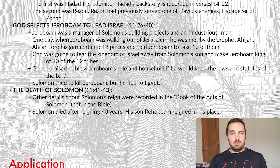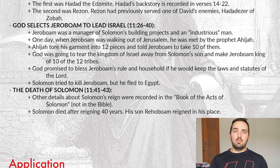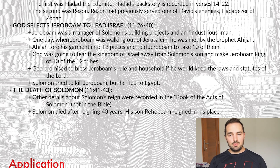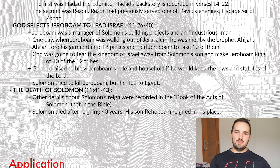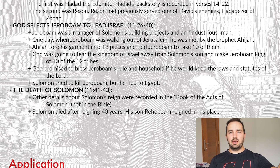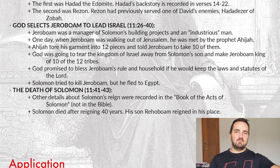Now Solomon found out about this. He tried to kill Jeroboam, but Jeroboam fled to Egypt. Definitely getting some Saul vibes there from Solomon — God says he's going to take the kingdom from you because you've been disobedient, and then Solomon tries to kill the guy that the Lord appoints to be the next king. Not moving in a good direction.